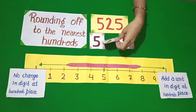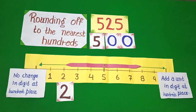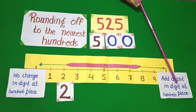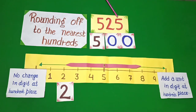We have digit 2 at the 10th place. Students, if you want to round off to the nearest 100s, put right 2 zeros. See then the 10th digit — 5 to 9, add a unit to the 100s. But here, the digit is 2 at the 10th place. So dear students, number 525 rounded off to the nearest 100s is 500.